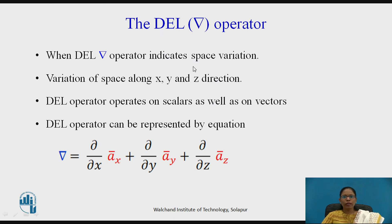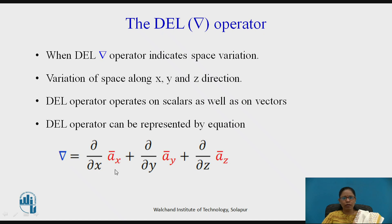The del operator indicates a space variation — basically a variation of space along the three coordinate axes, that is the x, y, and z directions. The del operator can operate on both scalars and vectors. It can be represented as: (∂/∂x)âx + (∂/∂y)ây + (∂/∂z)âz, representing variation along the x, y, and z directions.